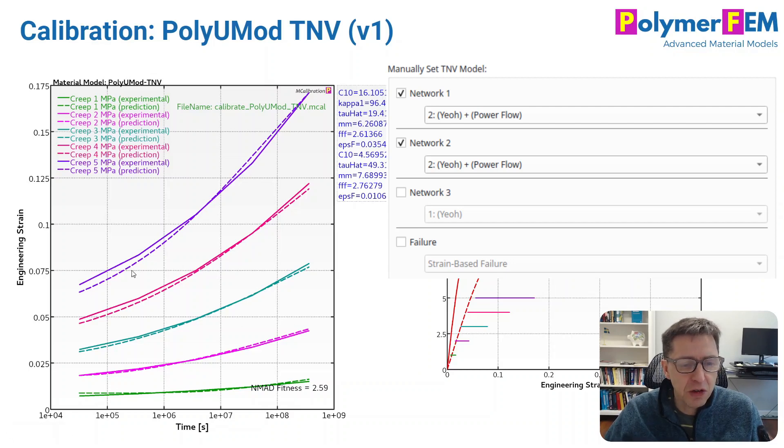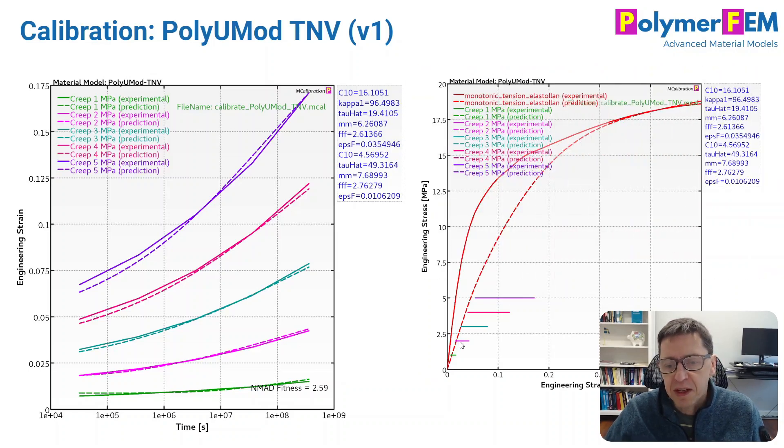We see that the creep predictions look really right on. I get an error that's less than 3% for the creep by itself. And then this is the, to the right, I'll see the stress-strain curve prediction too. So the overall error is about 5% in this case.